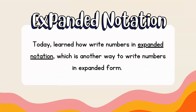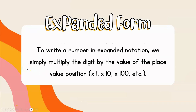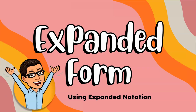Today we learned how to write numbers in expanded notation — another way to write numbers in expanded form. It's good to know this because as you move into older grades and learn more math and science, you're going to write numbers this way. To review: we simply multiply the digit by the value of its place value position — times 1 for ones, times 10 for tens, times 100 for hundreds, and so on. My name is Mr. Pearson and this has been Expanded Form using Expanded Notation. Thank you very much — we'll see you next time.